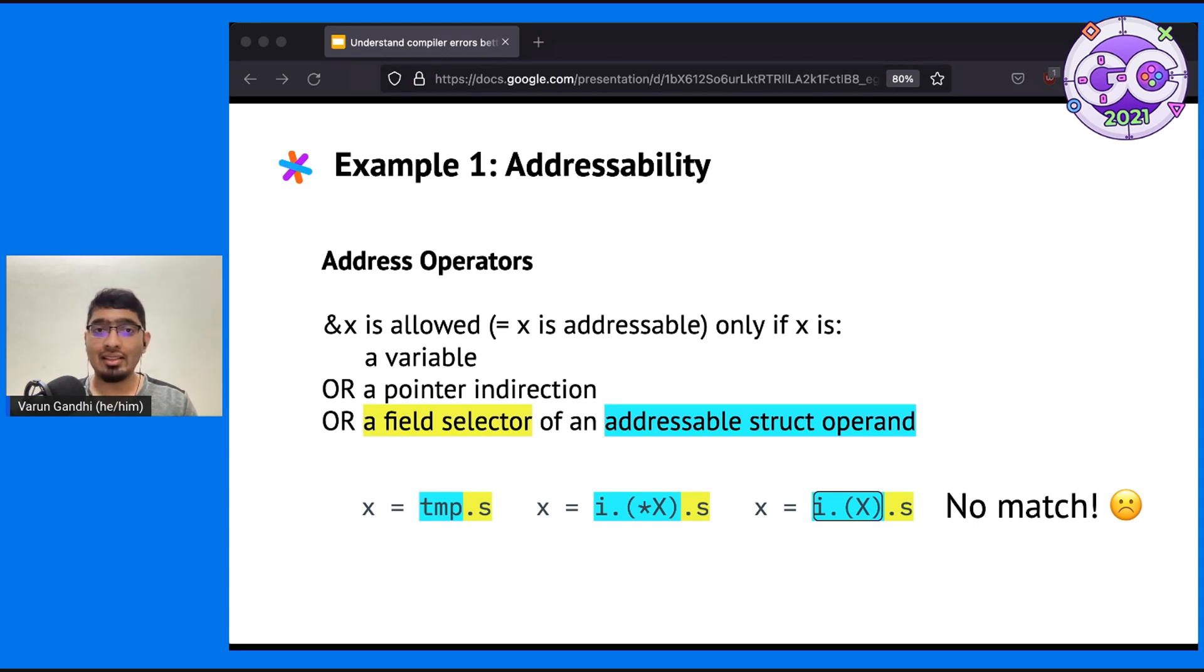However, in the last case, i.x is neither a variable nor a pointer nor a field selector. Since it doesn't match any of the cases, we're forced to conclude that i.x is not addressable. Hence, i.x.s is also not addressable. That's why the compiler gave us an error for the last case, stating that we couldn't take the address of i.x.s.